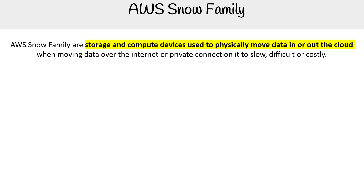Hey, this is Andrew Brown, and we are taking a look at the AWS Snow family. These are storage and compute devices used to physically move data in or out of the cloud when moving data over the internet or private connections, when the connection is too slow, difficult, or costly.